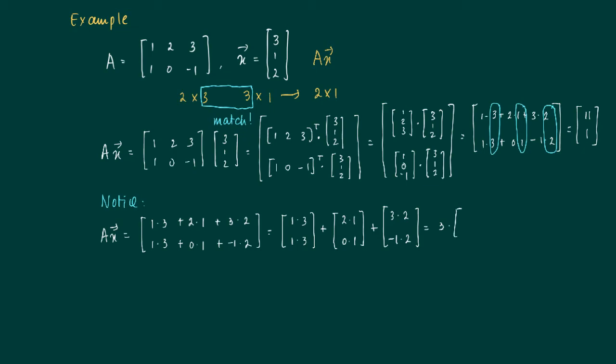So we get 3 times the vector 1, 1 which is over here. We take out the scalar 3, here we take out the scalar 1 and here we take out the scalar 2.